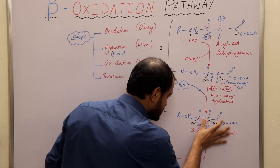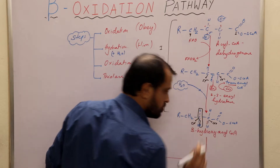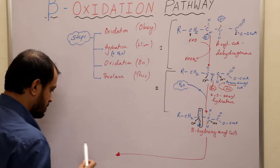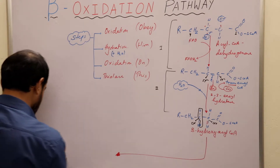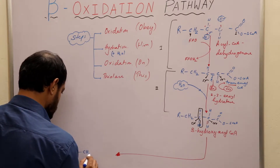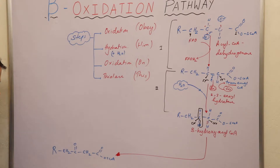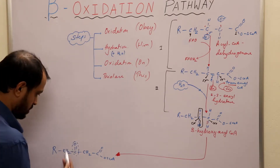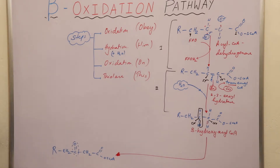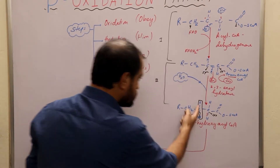In step 3, hydrogen will come out from the same carbon — these two hydrogens will come out, and the product will have a keto group established in this particular structure.